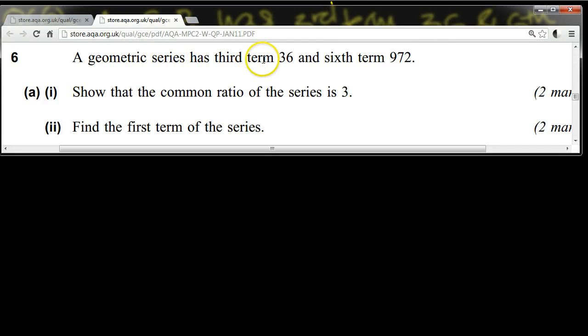A geometric series has third term 36 and sixth term 972. Show that the common ratio of the series is 3, and find the first term of the series.